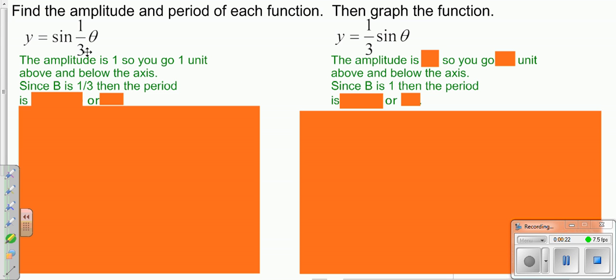Now the number in front of your variable of your angle is b, and remember that number affects your period. And your period always ends up being 2π divided by that number, so it's 2π divided by 1/3, which instead of dividing by 1/3, you multiply by 3 and you get 6π.